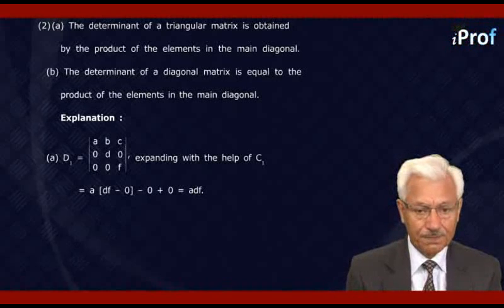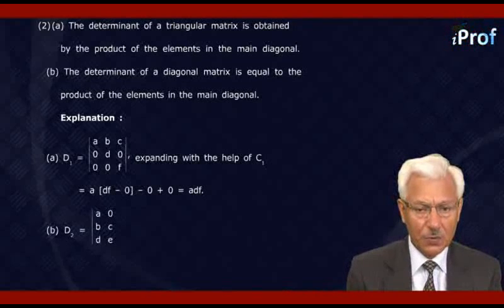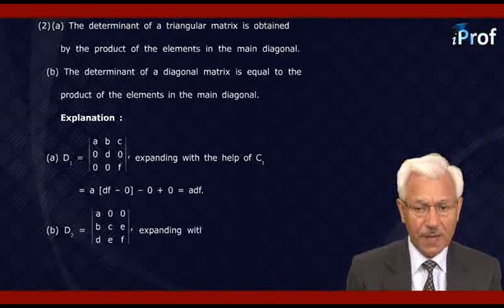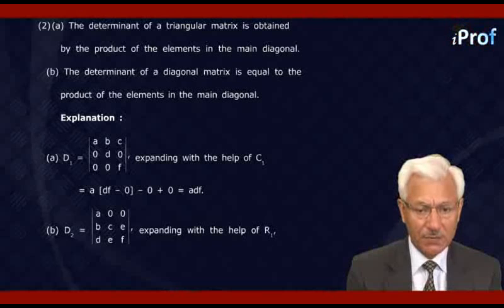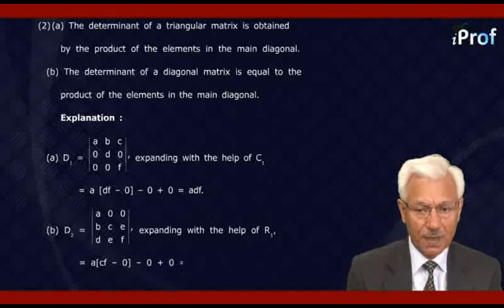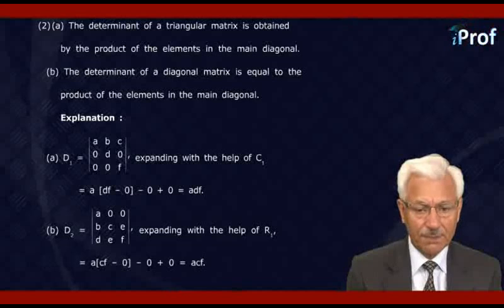Now consider D2, a lower triangular matrix with elements A, 0, 0 in row one; B, C, 0 in row two; D, E, F in row three. Its determinant is found by expanding with the help of R1. We get A times (CF minus 0), minus 0, plus 0, which equals A times C times F — again the product of the elements in the main diagonal. Similarly, it can be proved for the diagonal matrix.